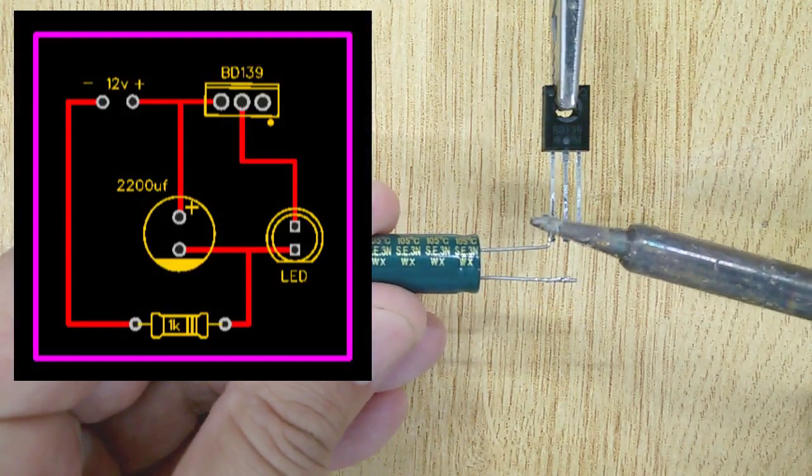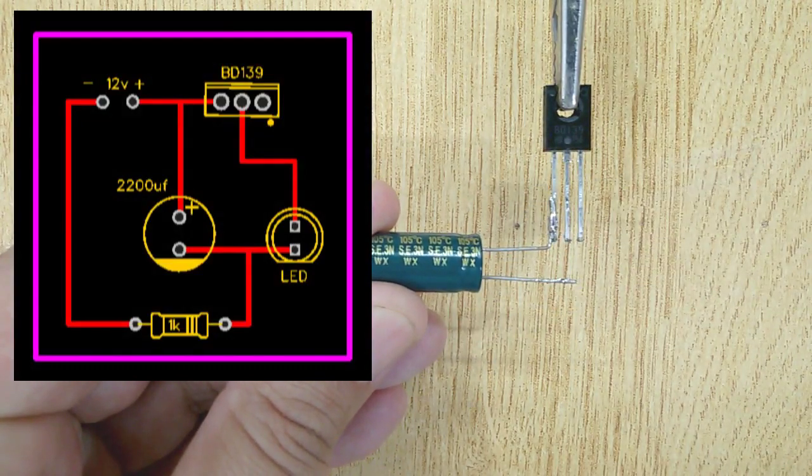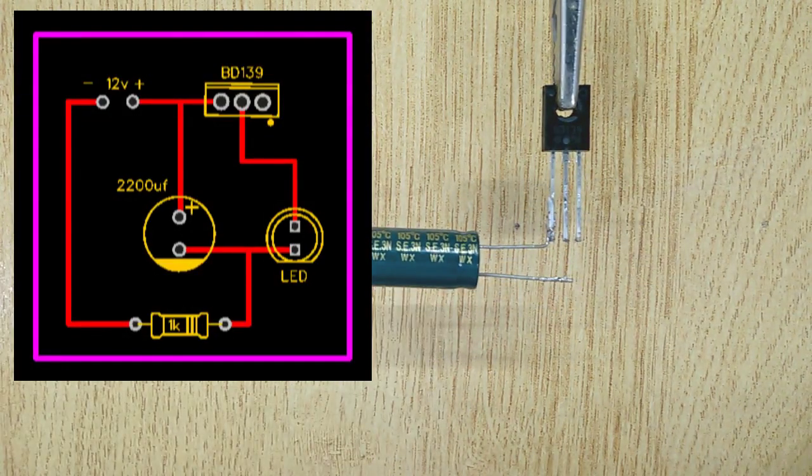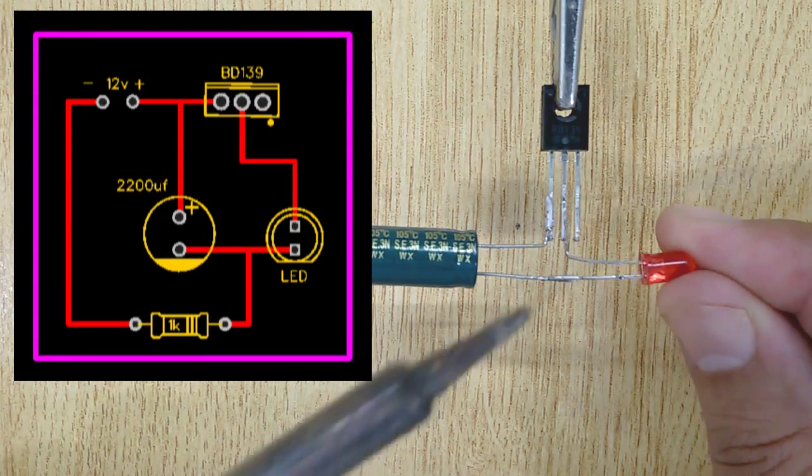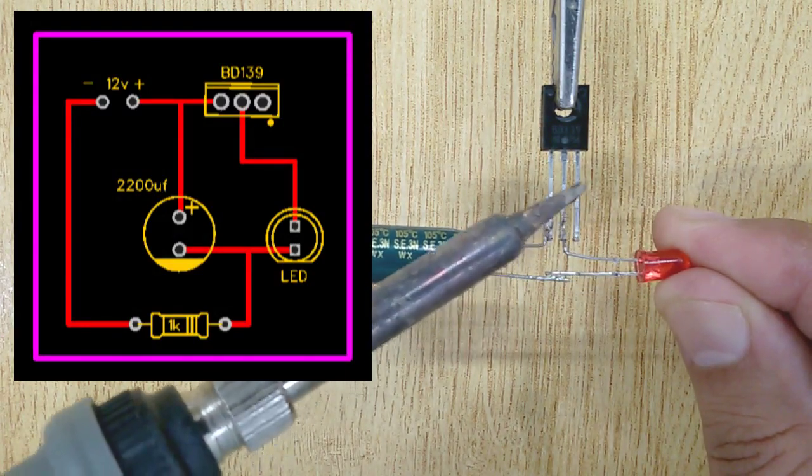First, solder the positive pin of the capacitor with the emitter of transistor BD139 and then solder the positive pin of LED with the collector of transistor BD139.